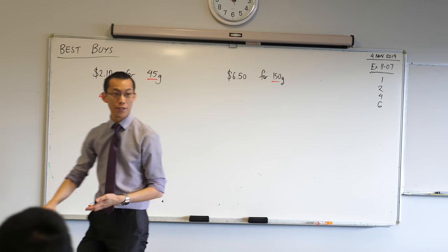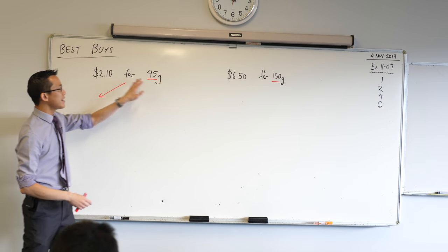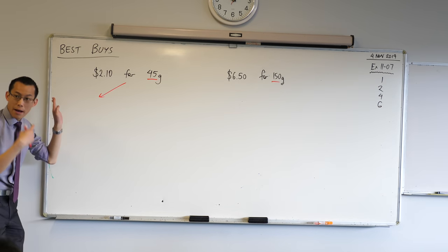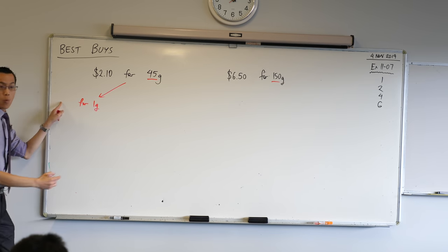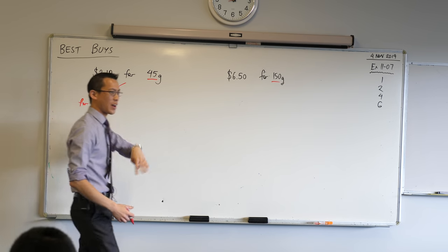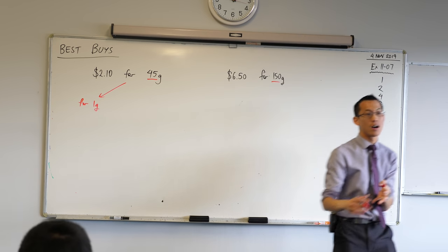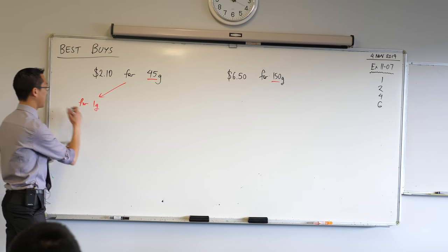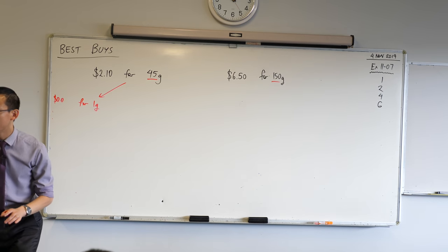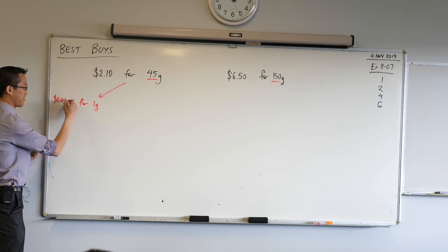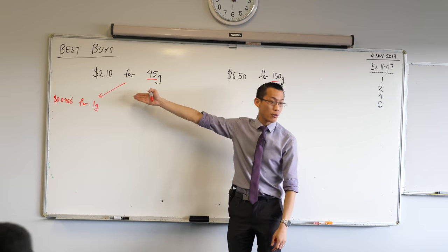You might want to get your calculator out for this part, because we're going to get some weird numbers here. So what I'm going to do is I'm going to divide each of these by 45. So that means I'm going to get some amount of money for one gram. Now this is a small amount of money, you can divide by 45, so it's going to be pretty small, some number of cents, I'm guessing. Has someone got an answer for me? I'm expecting you're getting 0.0 something. What do you got? Four lots of sixes? 0.0466 repeater, and so on. Okay, so that's how much it costs for one gram using this bag.